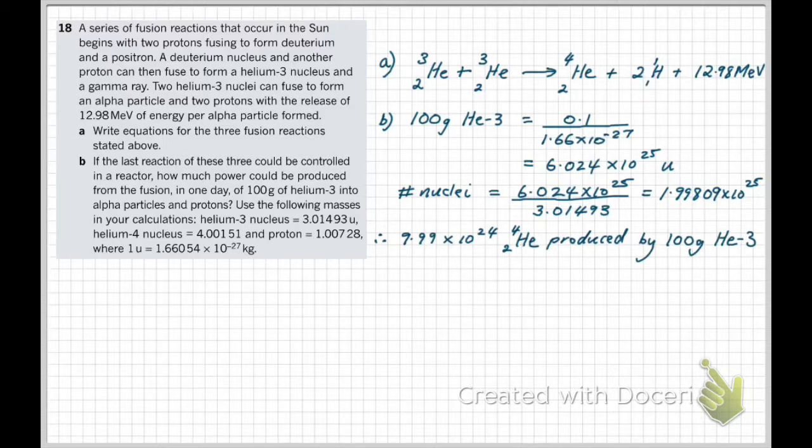Now because it takes two helium-3 nuclei to produce one alpha particle, we need to divide that number by two, and we then know that 9.99 by 10 to the power of 24 alpha particles are produced by 100 grams of helium-3.